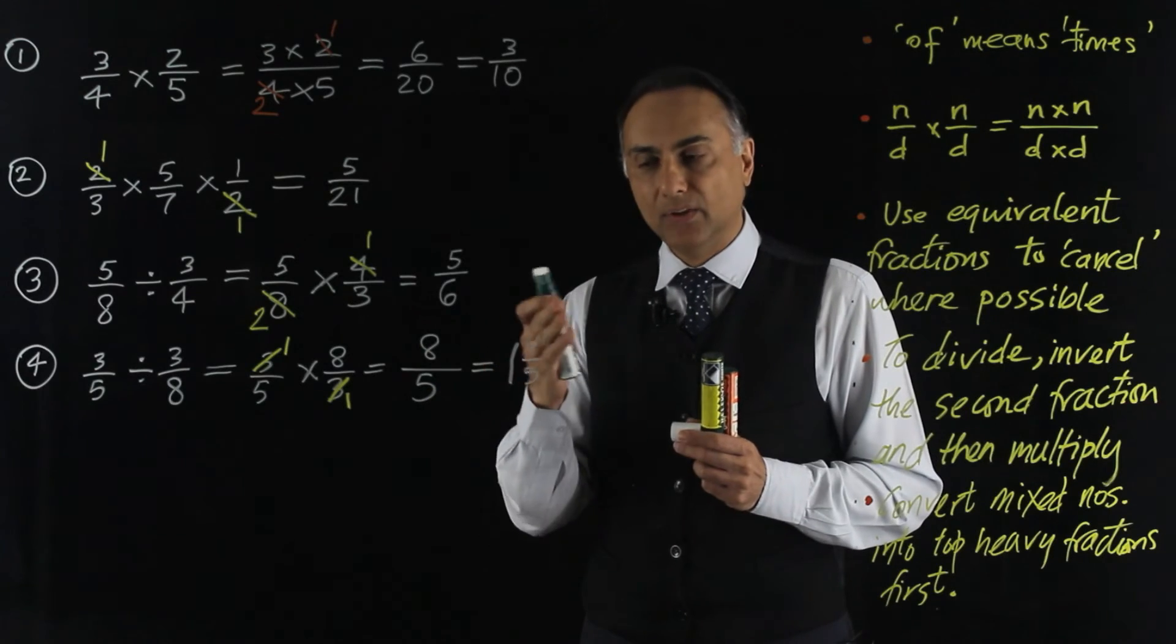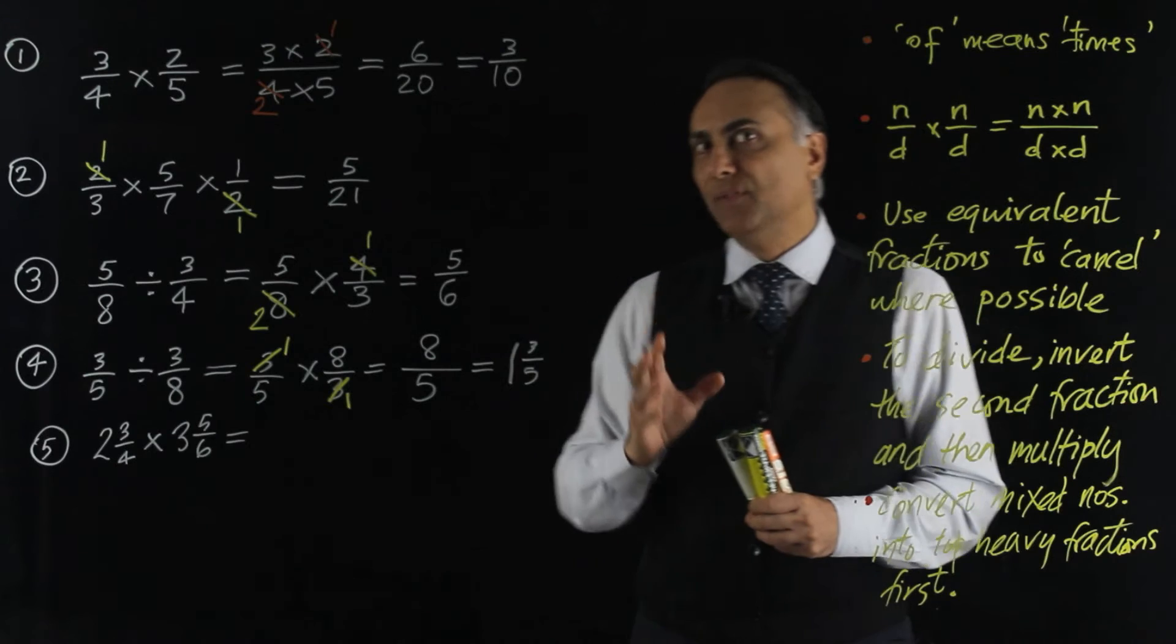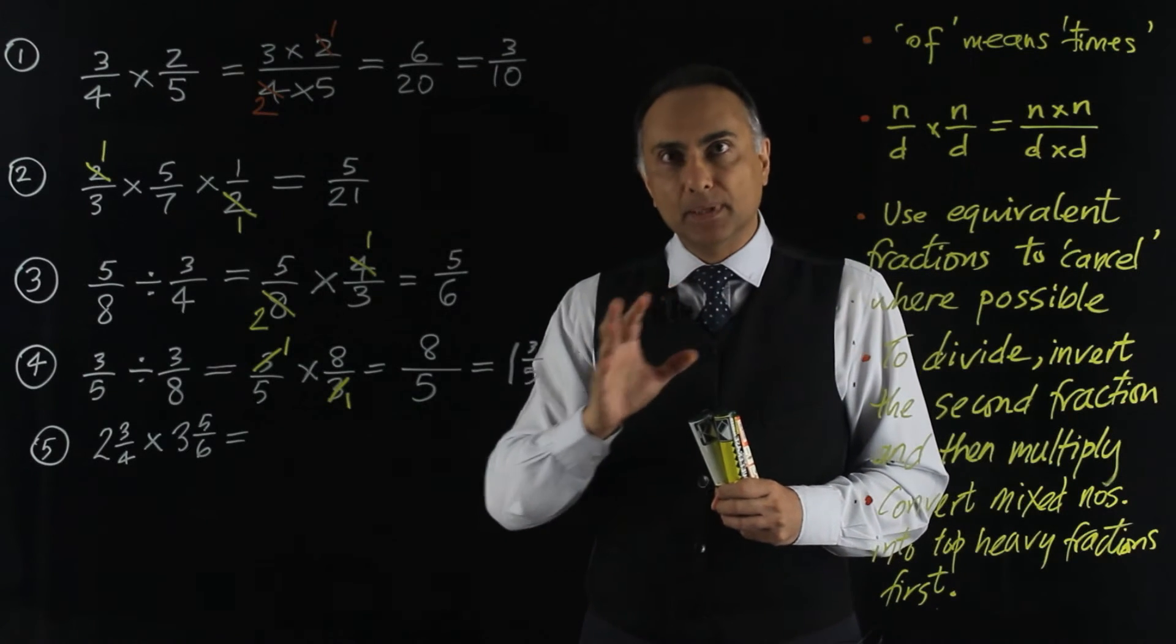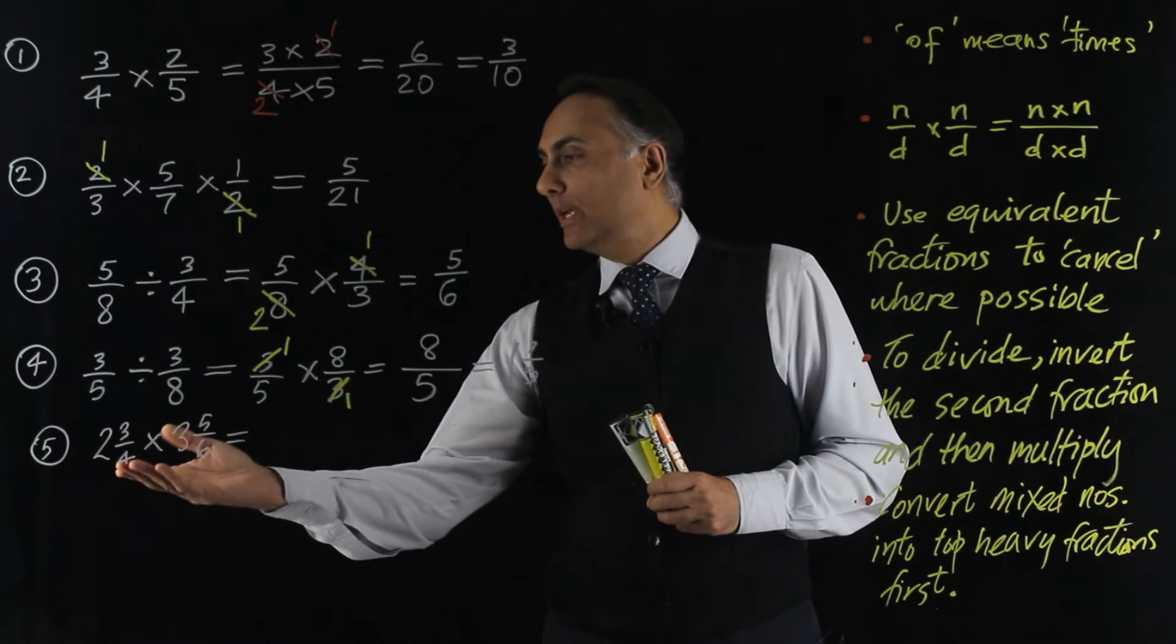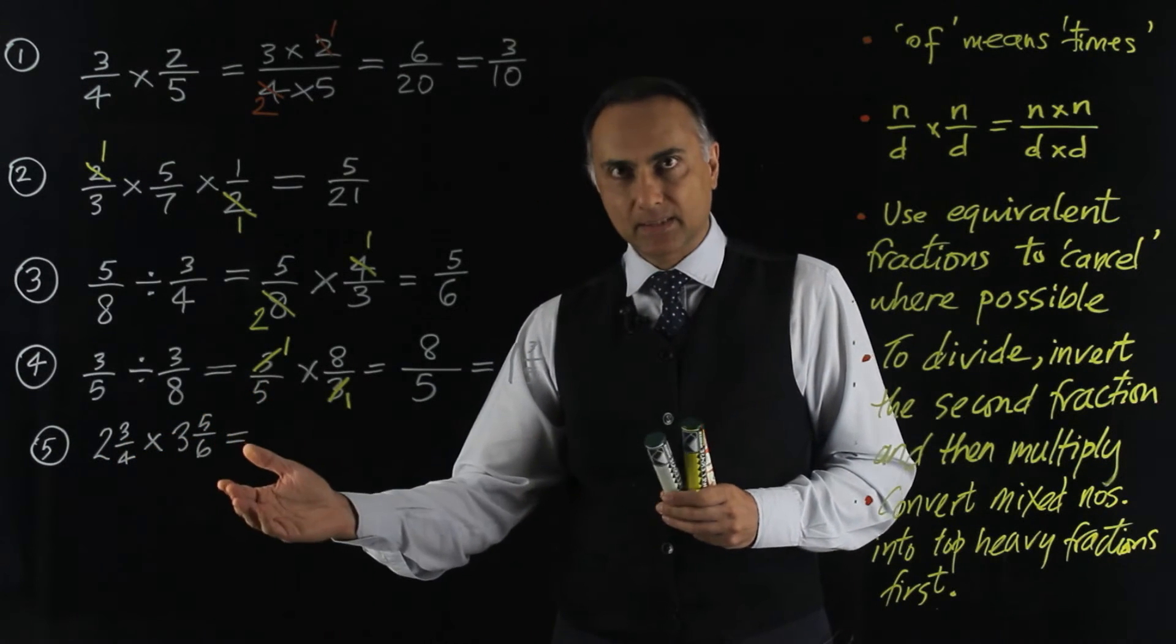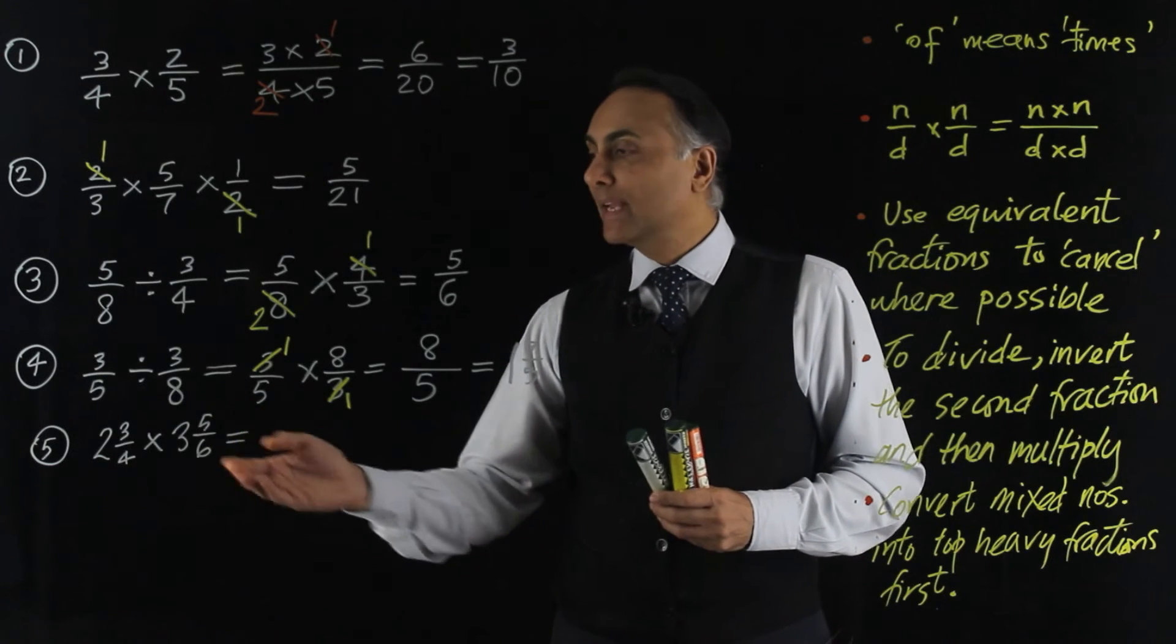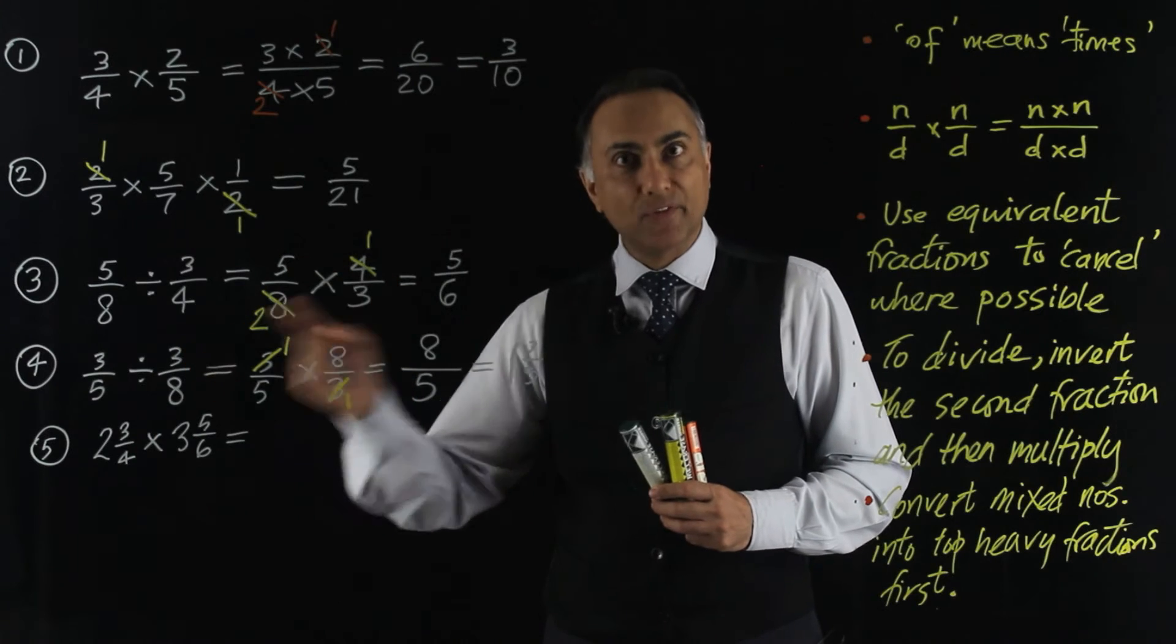So 8 fifths is 1 and 3 fifths. This leads us into what do you do if you had mixed numbers involved in multiplication. So here we have 2 and 3 quarters multiplied by 3 and 5 sixths.